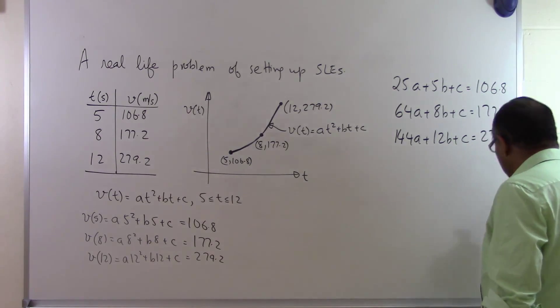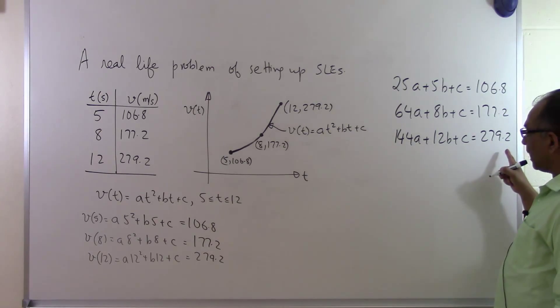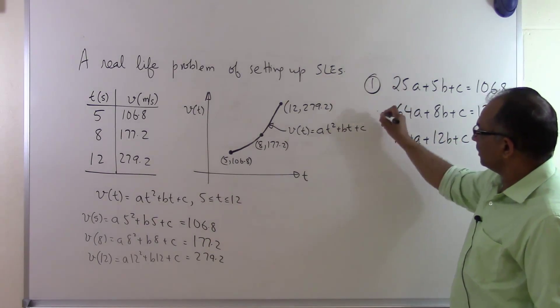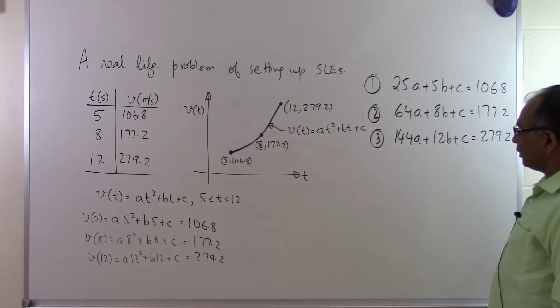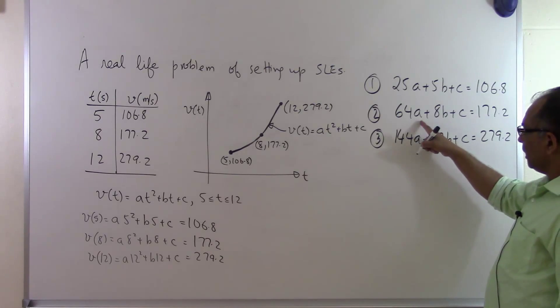So what I have are three equations and three unknowns. This is my first equation, this is my second equation, this is my third equation. I have three equations and the three unknowns are a, b, and c.